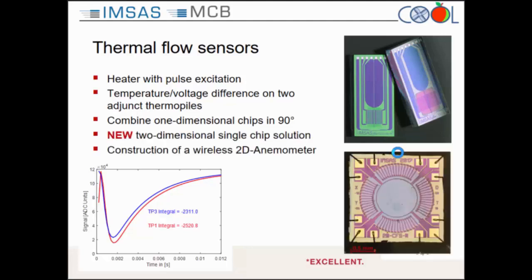Now we have good news. So far, we used two of our old thermopiles for a two-dimensional measurement and mounted them at 90 degrees for X and Y direction. Two weeks ago, we finished our new chip, where we can do everything — X and Y direction — with a single chip, using a heater in the center and four thermopiles.